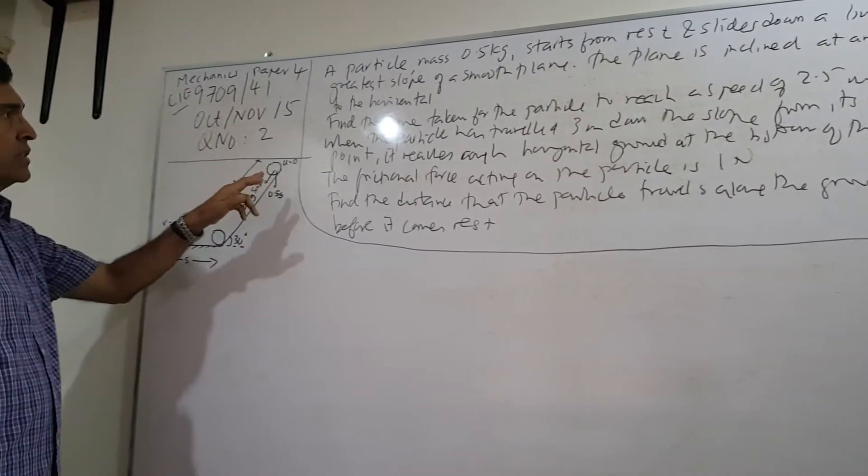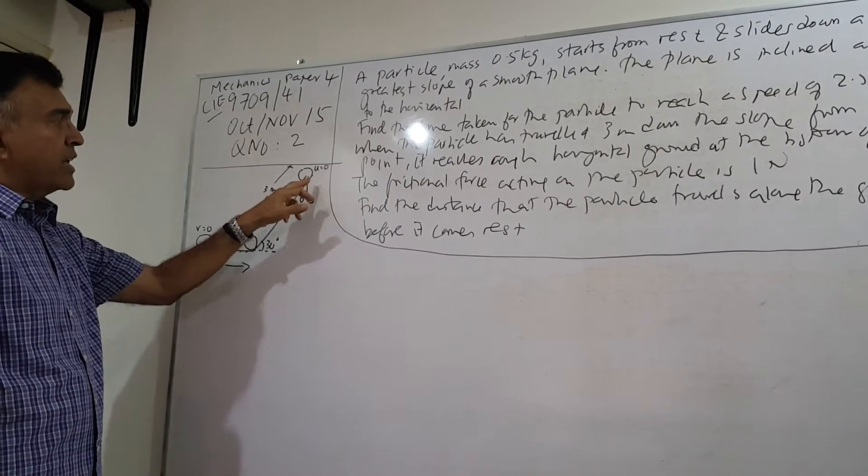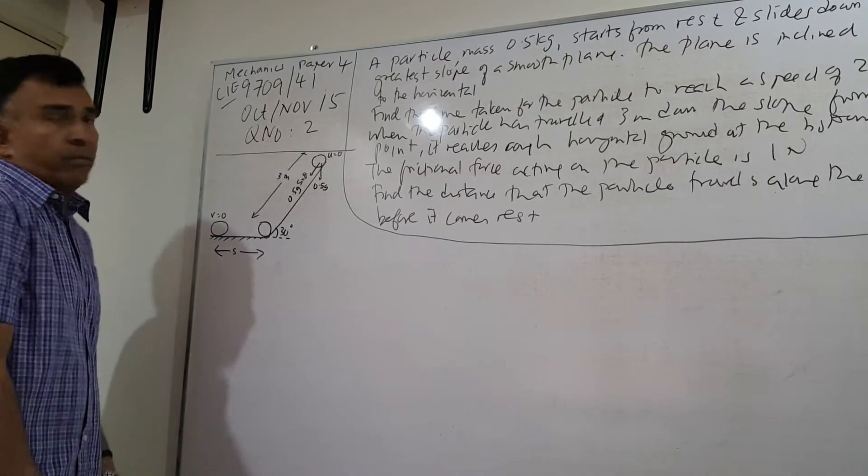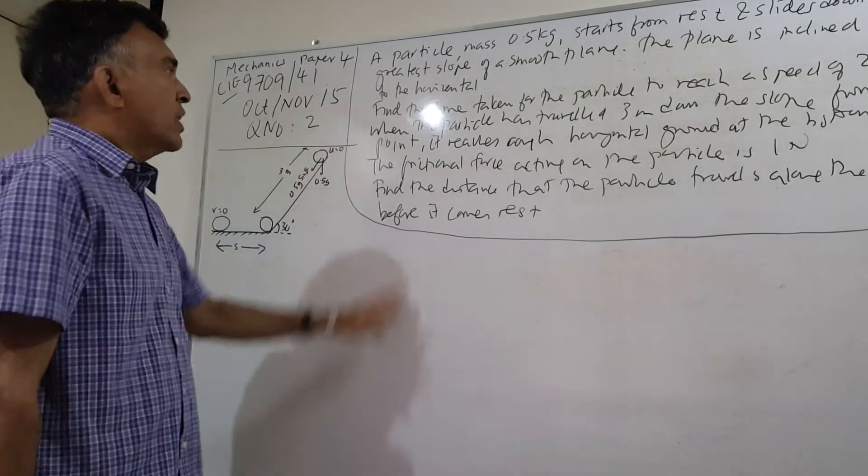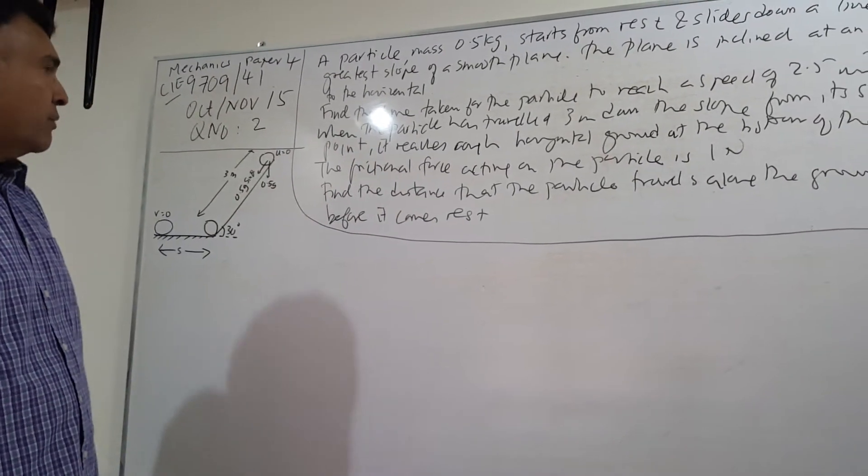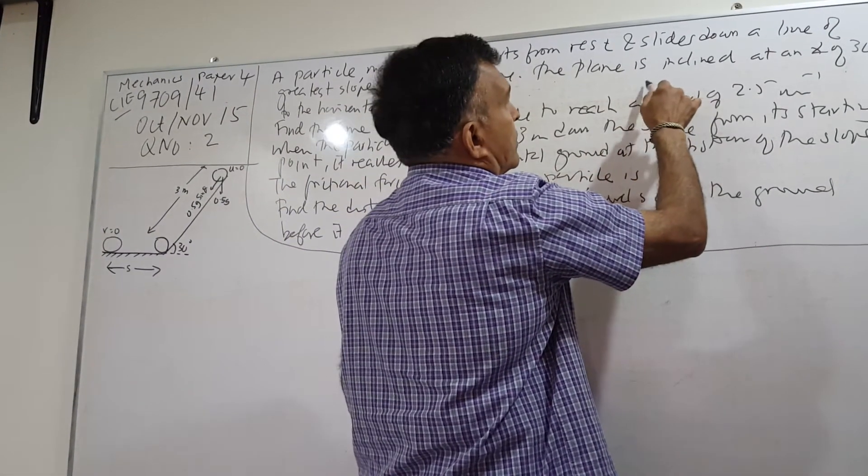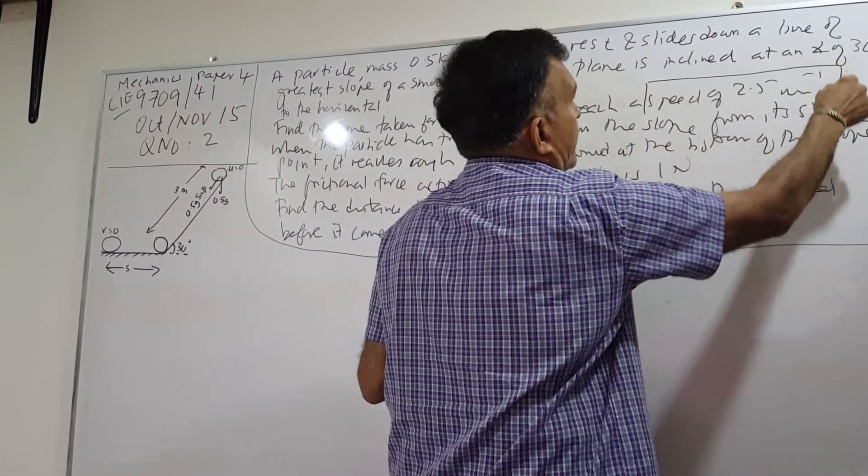This particle is going to slide down this slope inclined at 30 degrees. It starts from rest. You need to find the time taken for the particle to reach the speed of 2.5 meters per second.